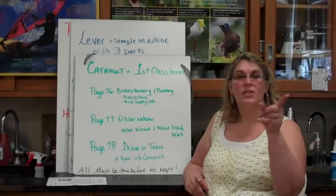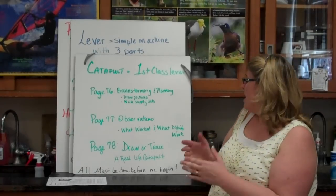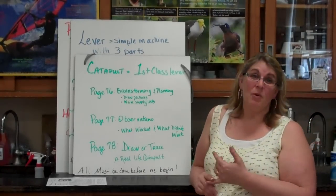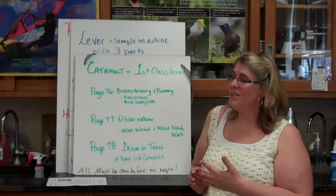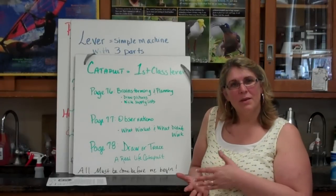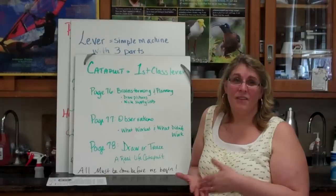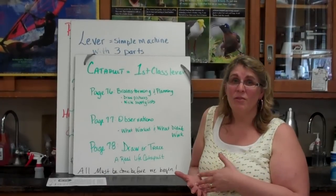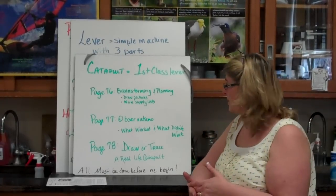On page 77, I want you to title it, Observations. Here, you're going to be writing down, well, this worked, what worked, what didn't work. And guys, I think we learn a whole lot more sometimes from the things that we fail on than the things that we succeed on. So, please, don't be afraid to write down what mistakes you made and what didn't work well.